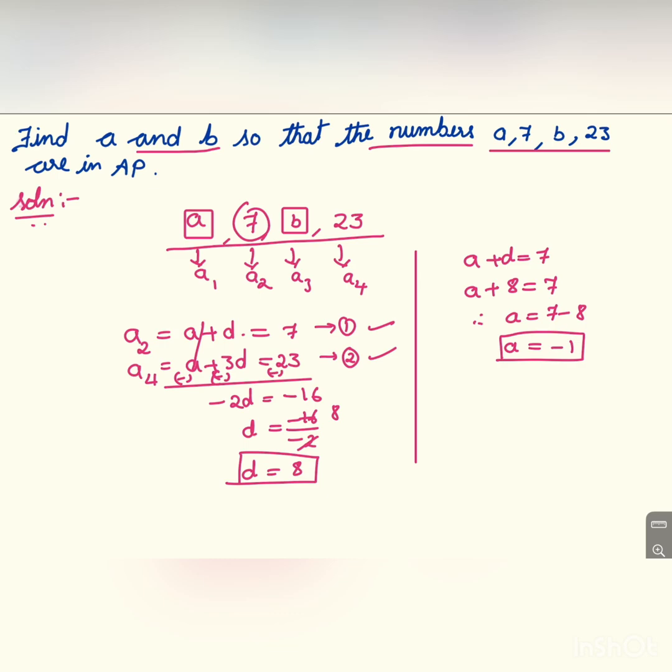Hence, the first term is minus 1, so A is minus 1. And the third term B equals A plus 2D. A is minus 1 plus 2 into D is 8. So minus 1 plus 16 equals 15, therefore the third term is 15.